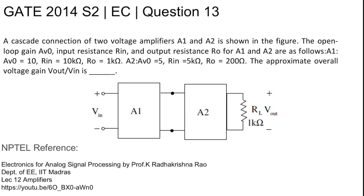This is GATE 2014 Set 2 EC Question Number 13. A cascade connection of two voltage amplifiers A1 and A2 is shown in the figure. The open loop gain Av0, input resistance Rin, and output resistance Ro for A1 and A2 are as follows: A1 has gain Av0 = 10, Rin = 10 kΩ, and Ro = 1 kΩ. A2 has Av0 = 5, Rin = 5 kΩ, and Ro = 200 Ω. The overall gain Vout/Vin is being asked.